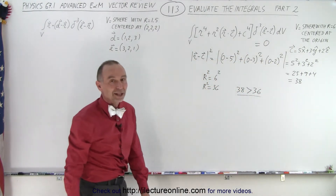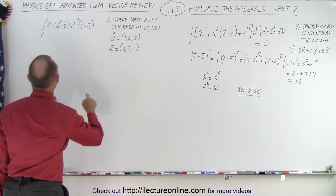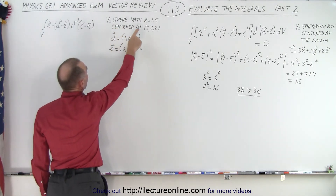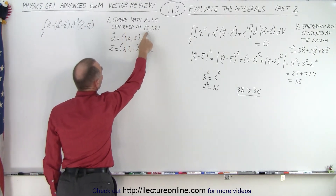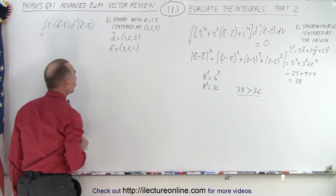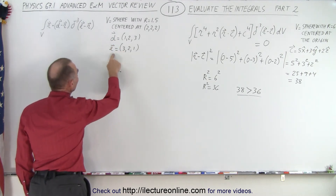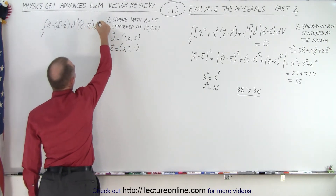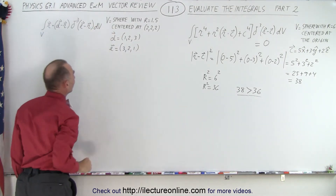Don't have to do anything else. Let's do the same over here. We're going to integrate over a volume defined as a sphere with radius 1.5, but in this case the center is at (2, 2, 2) away from the origin. We have the d vector defined and the e vector defined. Notice the delta function — I forgot my dv here — the delta function in three dimensions is the e vector minus the r vector.